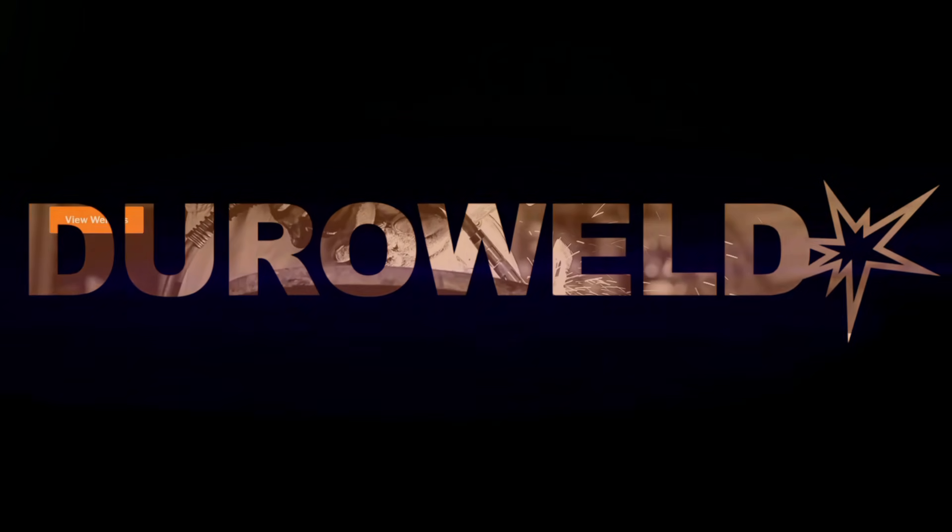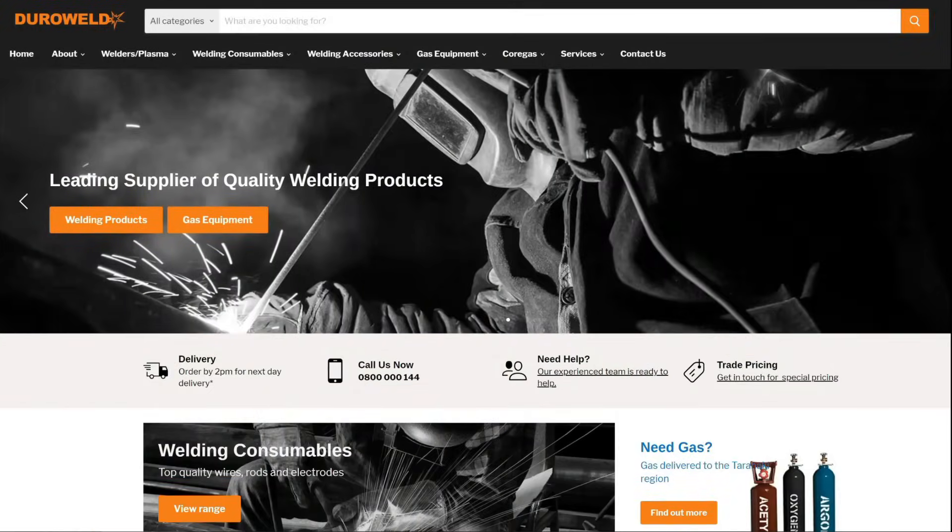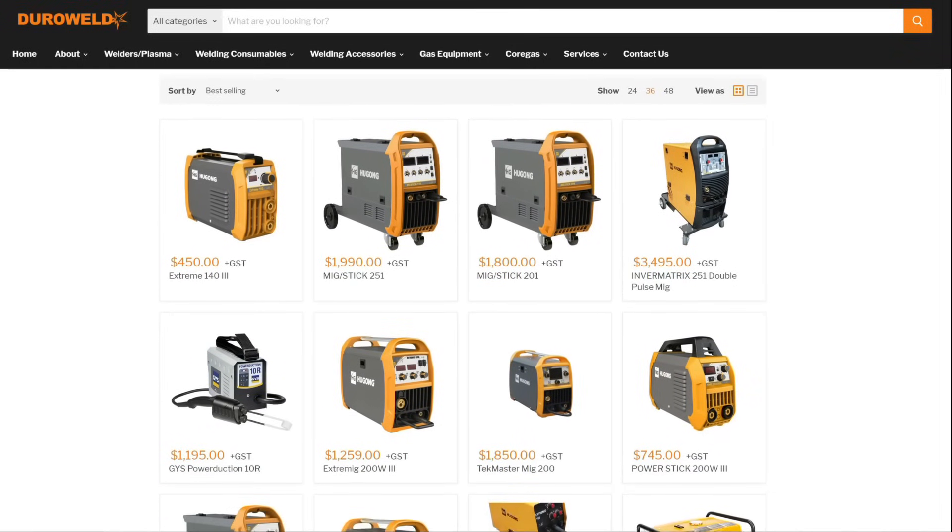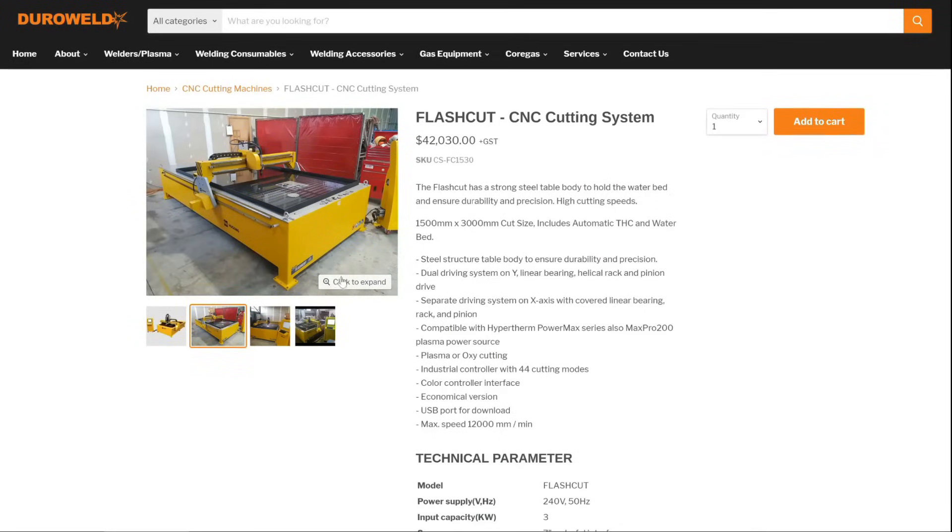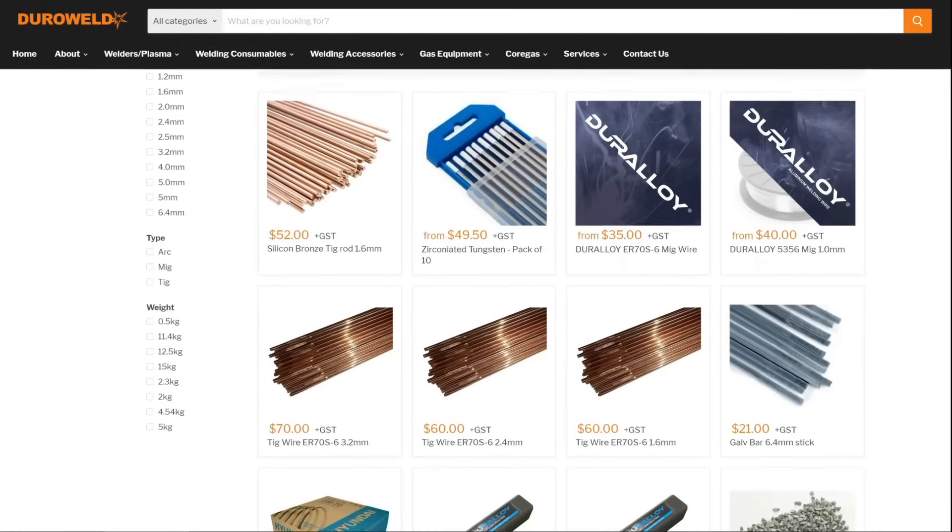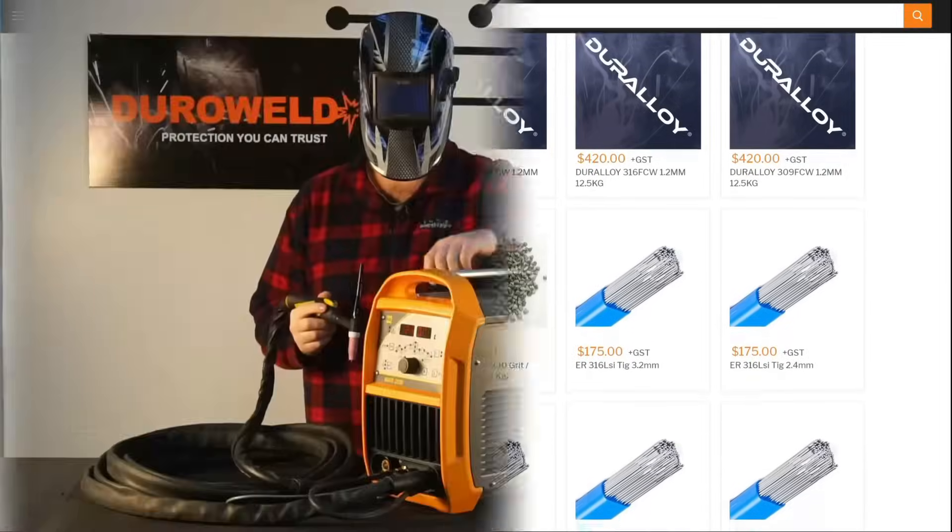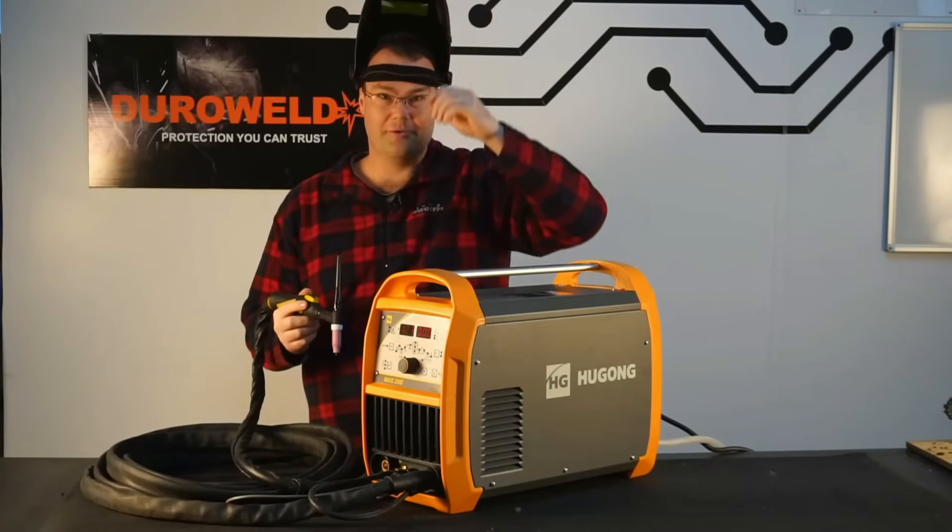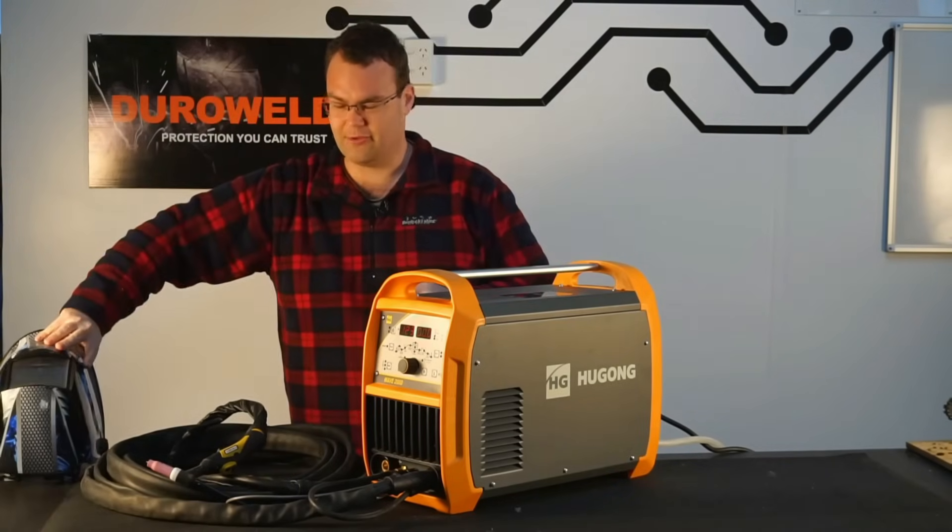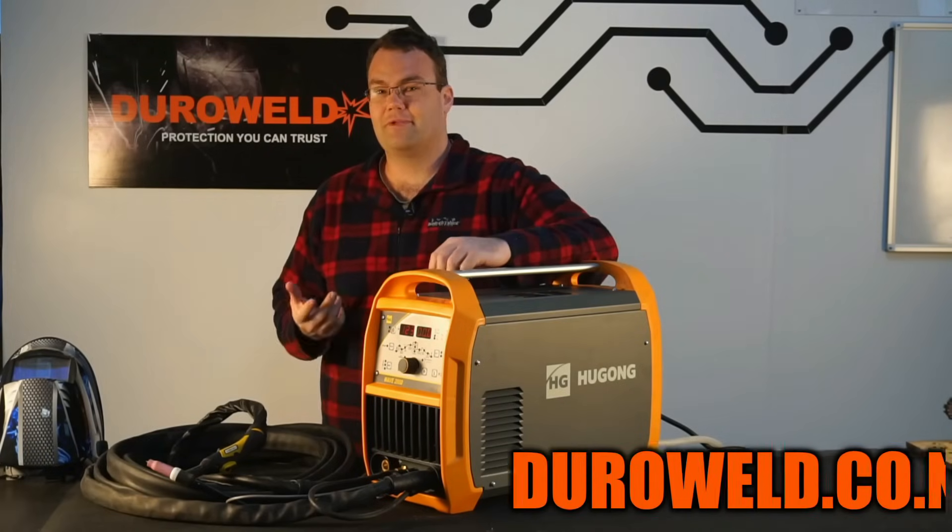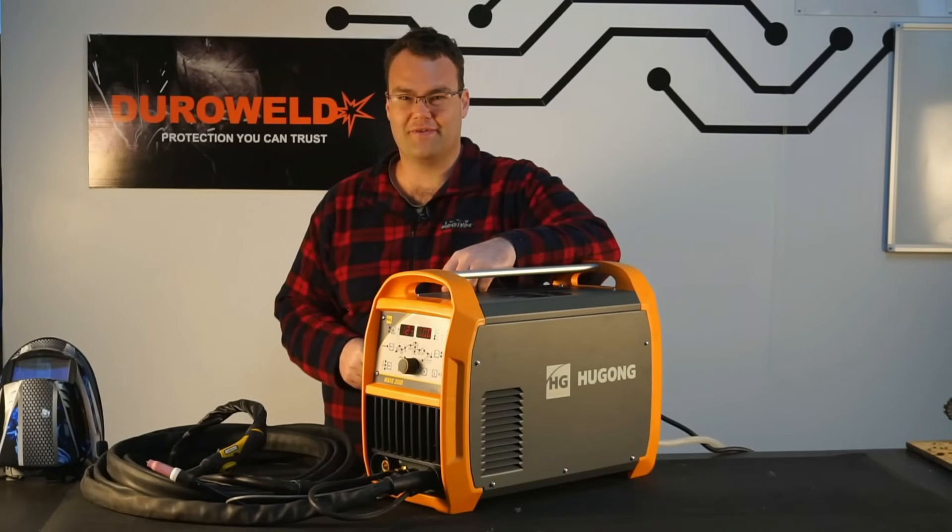This video is proudly sponsored by DuraWeld. DuraWeld provides quality welding and fabricating equipment from stick, MIG and TIG welders to plasma cutters and CNC machines. They also stock all the welding consumables you need to get your job done right. So whether you're a DIYer in the shed like myself or a professional needing industrial equipment, DuraWeld has you covered. Visit them today at DuraWeld.co.nz and a big thanks to DuraWeld for sponsoring this video.